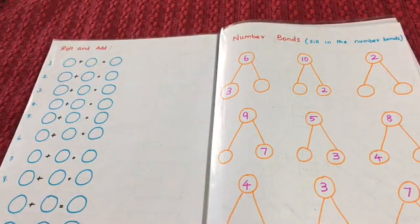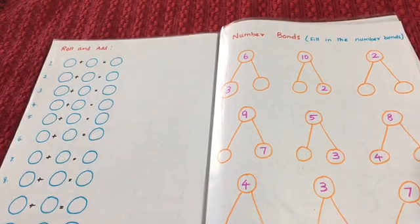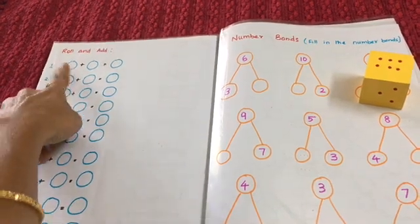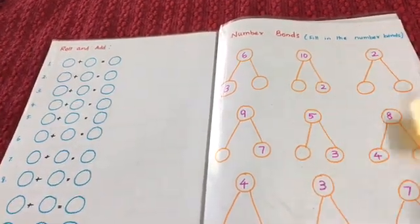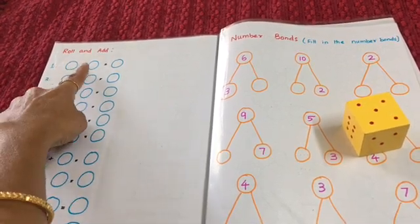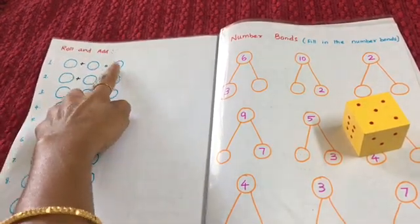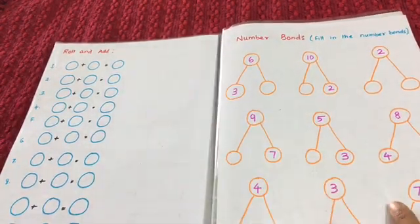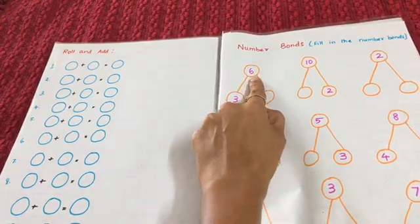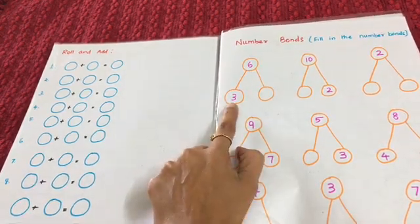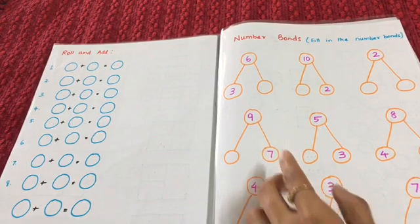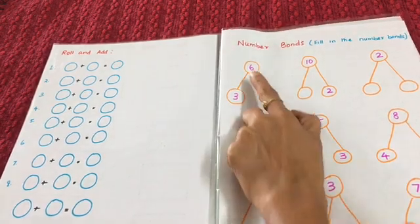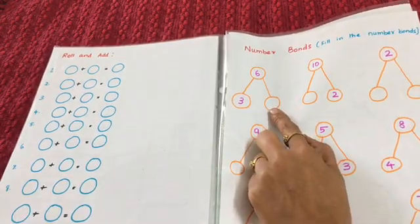This is 'roll and add.' He rolls the dice, sees number 6, writes it, then rolls again and gets 5 — so 6 plus 5 makes 11, and he writes 11. For number bonds, I have written number 6 and number 3, so he has to find how to make 6: 3 plus 3 makes 6, so he writes 3.